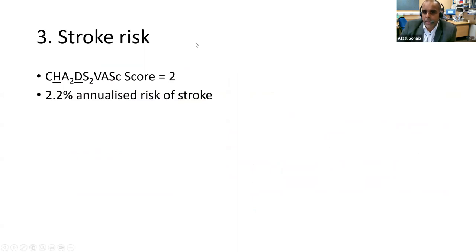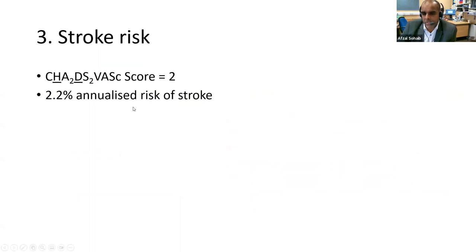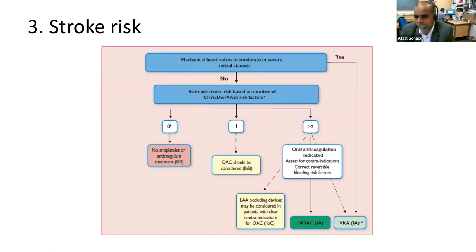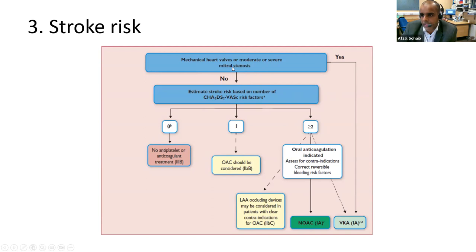Our patient has a CHADSVAS risk of two — so a 2.2% annualised risk of stroke — so he needs to be on anticoagulation. If a patient has mechanical heart valves or moderate to severe mitral stenosis, they need to go on warfarin — a vitamin K antagonist. DOACs are contraindicated in people with mechanical heart valves. That doesn't necessarily apply to tissue heart valves, but if it's a metallic valve, they need to be on warfarin.